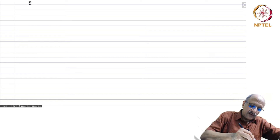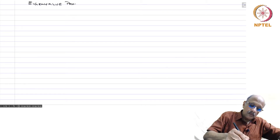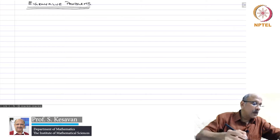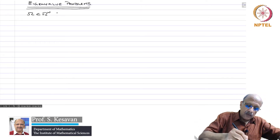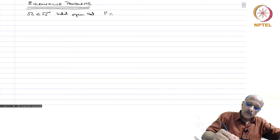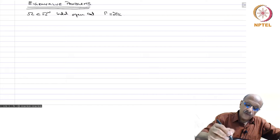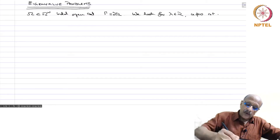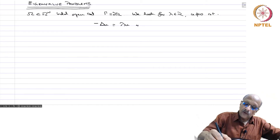We will now discuss a very important topic: Eigenvalue problems. Let omega be a bounded open domain in R^n, with gamma equal to the boundary d-omega. We look for lambda in R and u not equal to 0 such that minus Laplacian u equals lambda u in omega, and u equals 0 on gamma.